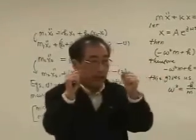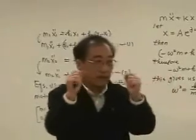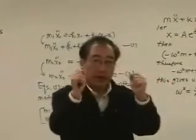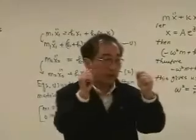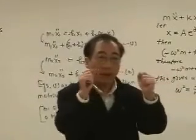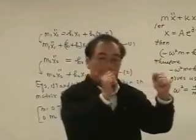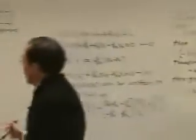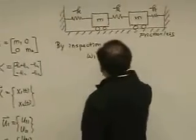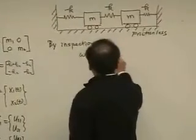The mass move like this, right? So what is the mass of this system? It's 2M. What is the stiffness of this system? 2K. So by inspection, we know that that would be K over M.